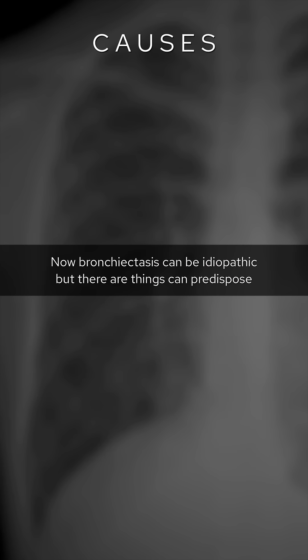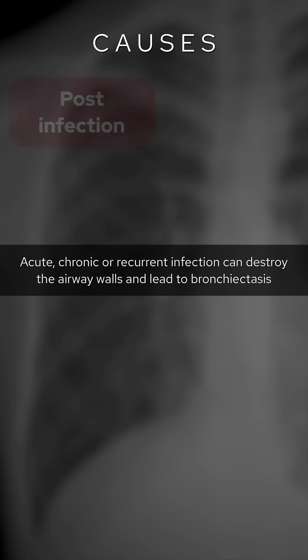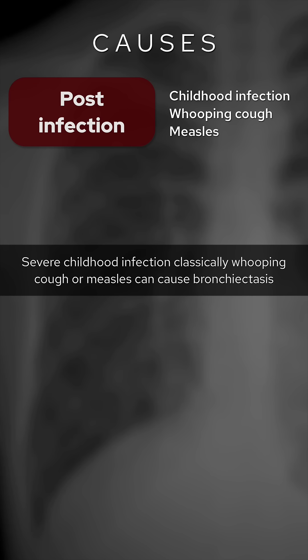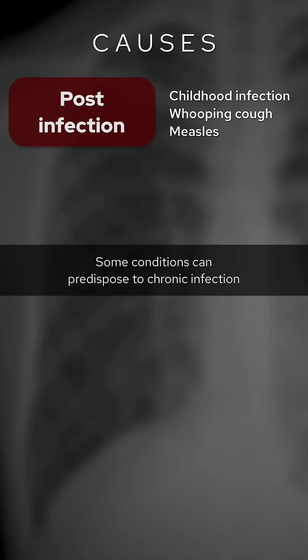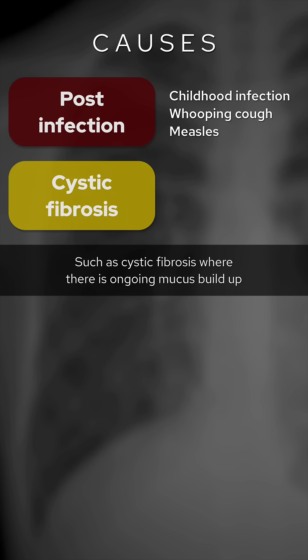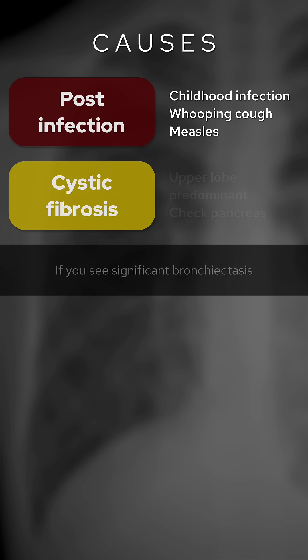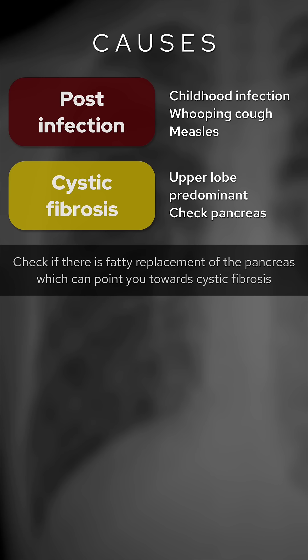Bronchiectasis can be idiopathic but there are things that can predispose. Acute, chronic, or recurrent infection can destroy the airway walls and lead to bronchiectasis. Severe childhood infection, classically whooping cough or measles, can cause bronchiectasis. Some conditions can predispose to chronic infection such as cystic fibrosis where there is ongoing mucus buildup. If you see significant bronchiectasis, check if there is fatty replacement of the pancreas which can point you towards cystic fibrosis.